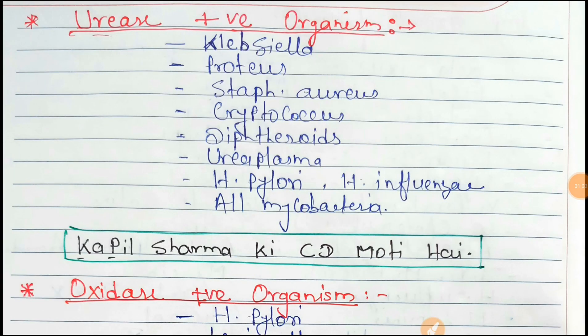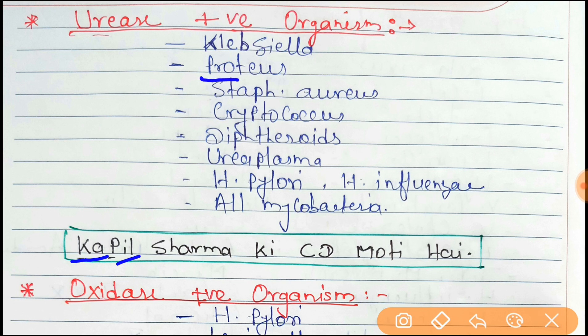The urease positive organisms — the trick is 'Kapil Sarma ki CD moti hai'. Here, 'Kapil' — K for Klebsiella, P for Proteus, and 'Sarma' — S for Staphylococcus aureus.